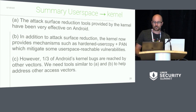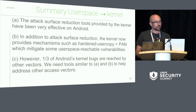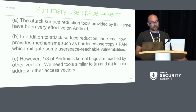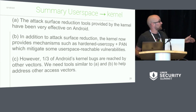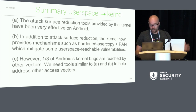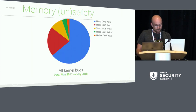A summary from this section: user space to kernel — we've got a lot of good tools there, provided by the upstream kernel, and they're fairly effective. However, about a third of the kernel bugs are reached by other vectors, and it would be nice if we had both good access control mechanisms as well as good bounds checking.